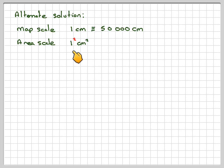There are alternative methods. Let's just look at an alternative solution. So, a map scale of 1 centimetre is 50,000 centimetres. So, an area scale will be 1 centimetre squared to 50,000 centimetres squared.